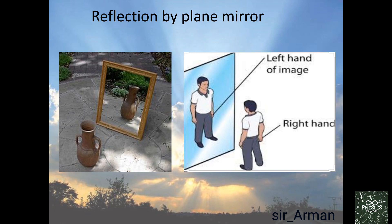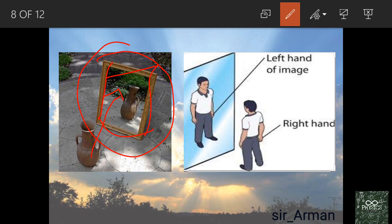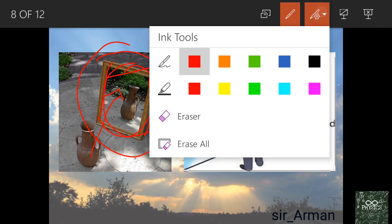Now let's study reflection by a plane mirror. Every morning you see yourself in a plane mirror. There is nothing behind the mirror physically, but you observe a whole world behind it — a virtual world. The image in the mirror which is not real is called a virtual image. You cannot obtain this image on a screen; you can only see it in the mirror.